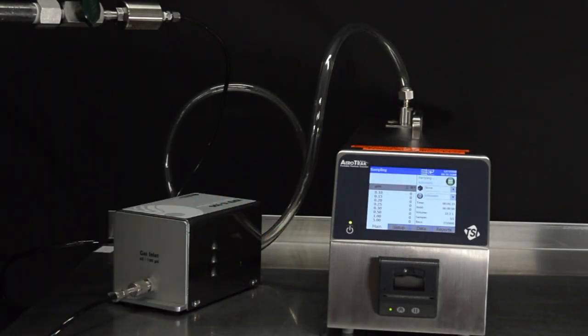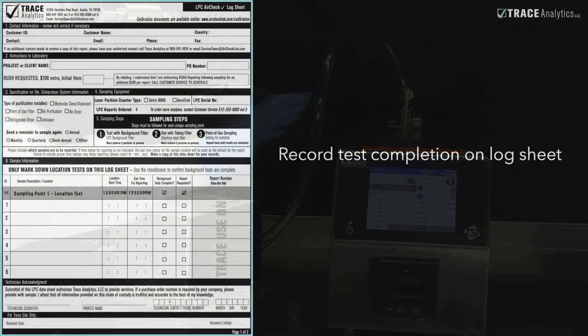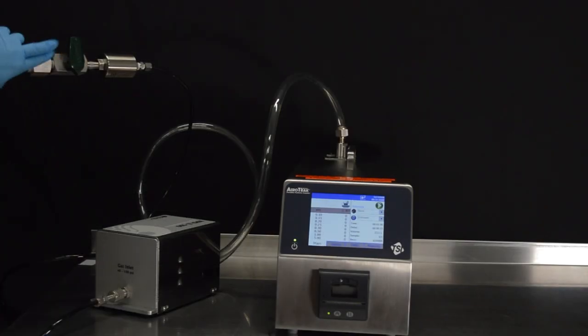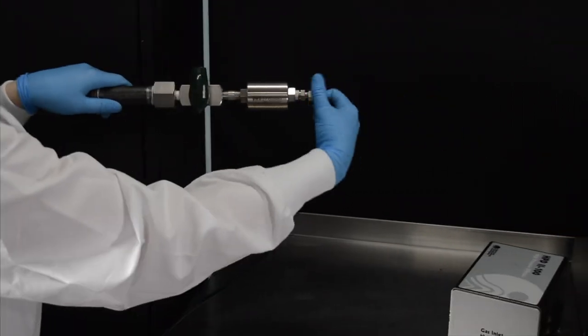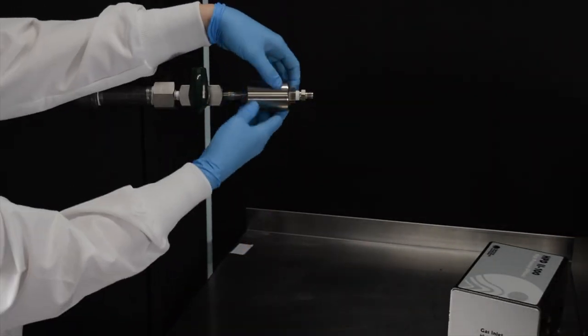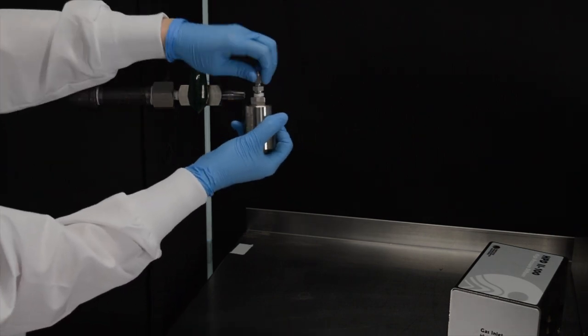Once the testing consistently reads zero particles, end the test and record its completion on the log sheet. Depressurize the line, remove the silver tubing background filter from the point of use, and replace its black and stainless steel caps. You can return it to the case.